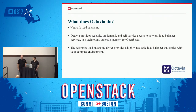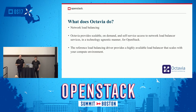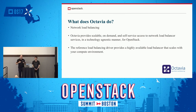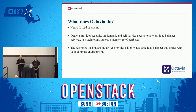What does Octavia actually do? Octavia is the project for network load balancing in OpenStack. It provides scalable, on-demand, and self-service access to a network load balancing service in a technology-agnostic manner. We provide an API that is the same regardless of whether you use the Octavia load balancer, an A10, VMVR, or F5. Octavia is the reference load balancing provider — it is highly available and scales with your computing environment by firing up VMs.